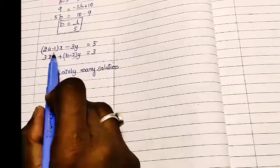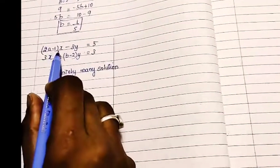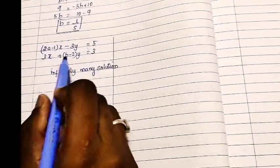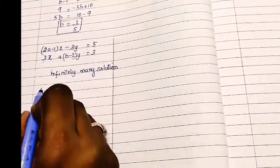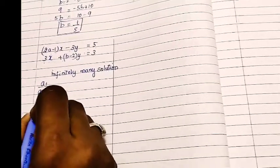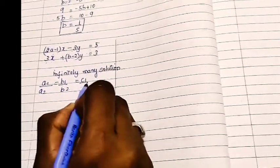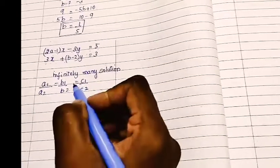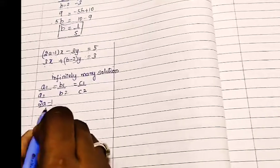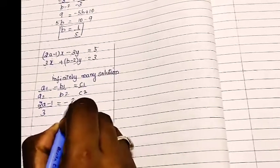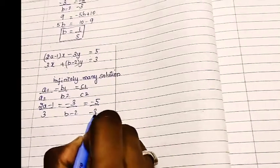The system of equations is given with infinitely many solutions: (2a-1)x minus 3y equals 5, and 3x plus (b-2)y equals 3. The condition is a1 by a2 equals b1 by b2 equals c1 by c2. So a1, the x coefficient, is (2a-1) by 3 equals minus 3 by (b-2) equals minus 5 by minus 3.